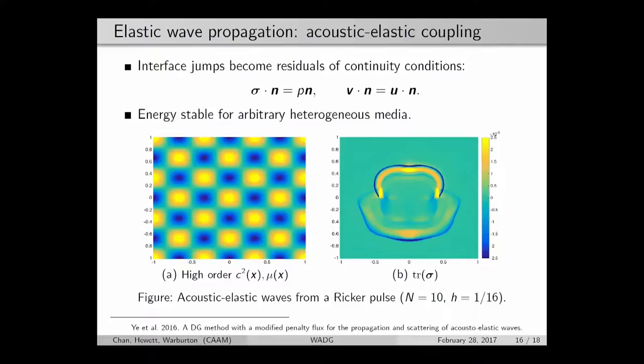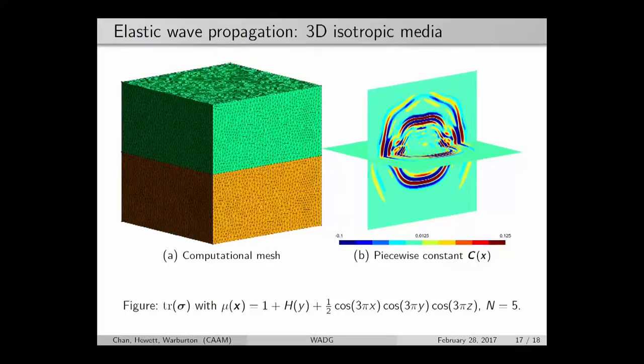Finally, I'll end on just a 3D example. Here's an example of isotropic media where I've taken the Lamé parameter mu to be equal to 1 plus a Heaviside function, so you have a discontinuity across this boundary, plus some spatially varying part. I'm running this for degree 5 polynomials on a computational mesh which looks like so.